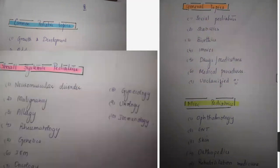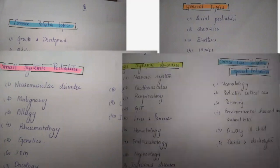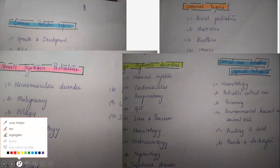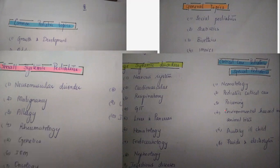Then you have small systems — proper systemic pediatrics like allergy, rheumatology, genetics — they don't take much time to prepare and are not given much importance. Then you have your large systemic disorders and critical care pediatrics. Don't forget to include poisoning, which we tend to forget. Environmental hazards like drowning, electrocution, and fluoride intoxication also get left out. Making this list gives you a broad idea of everything you need to cover.